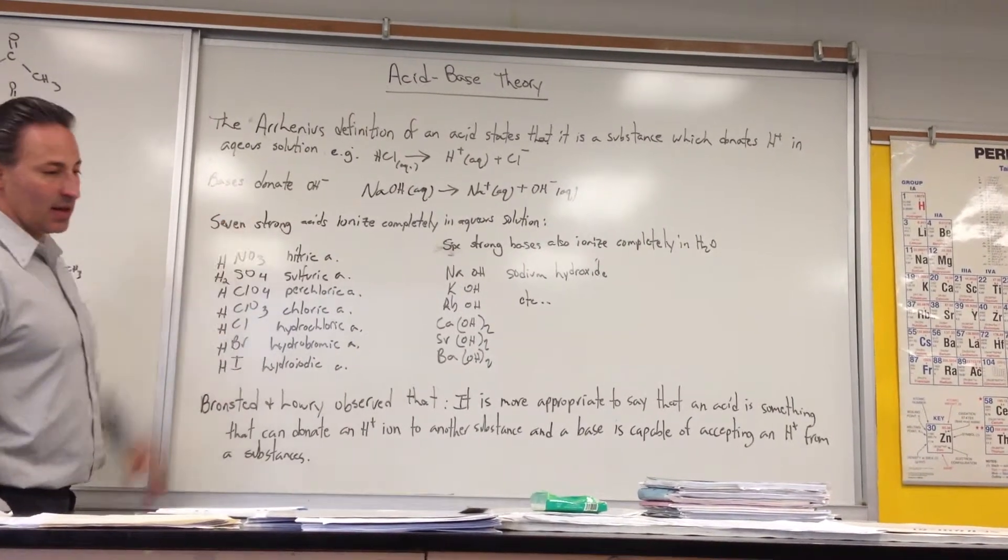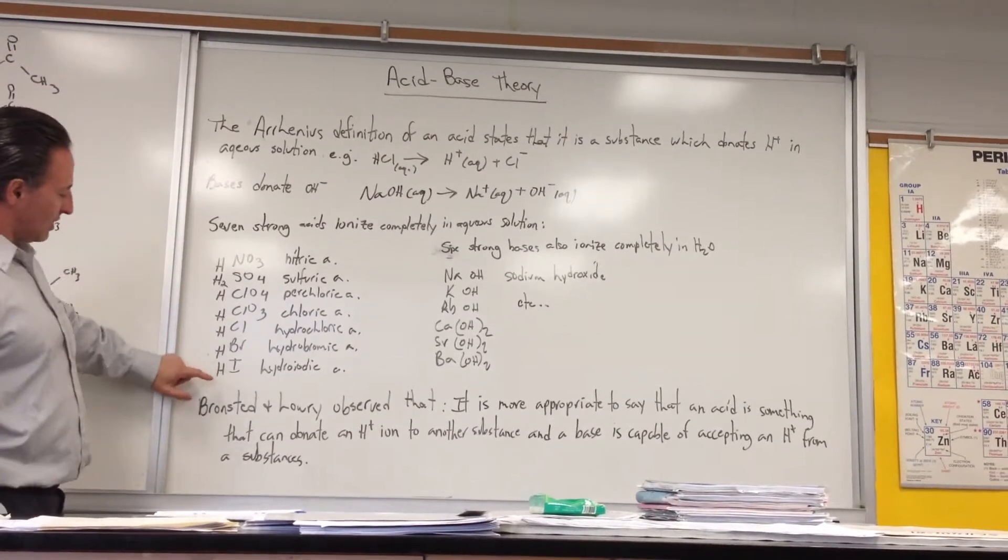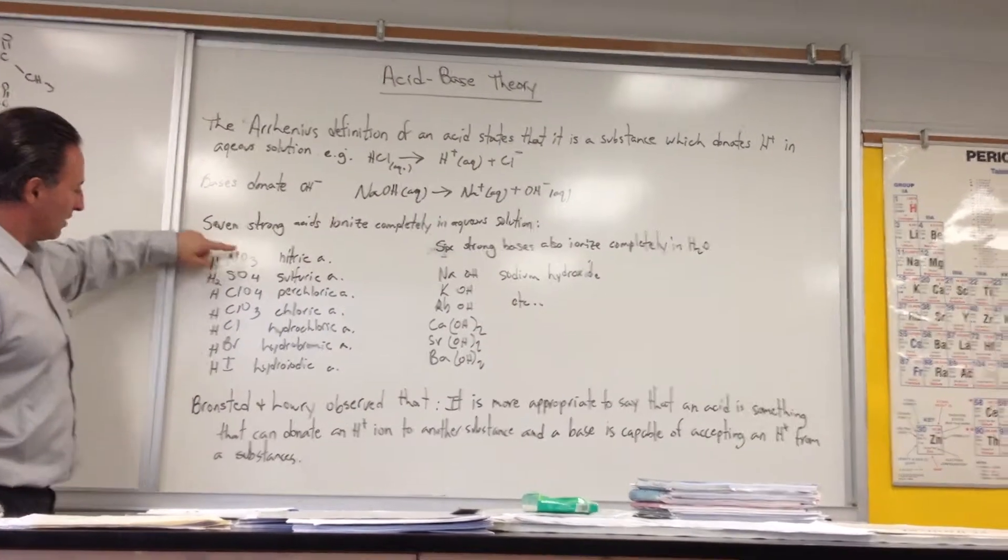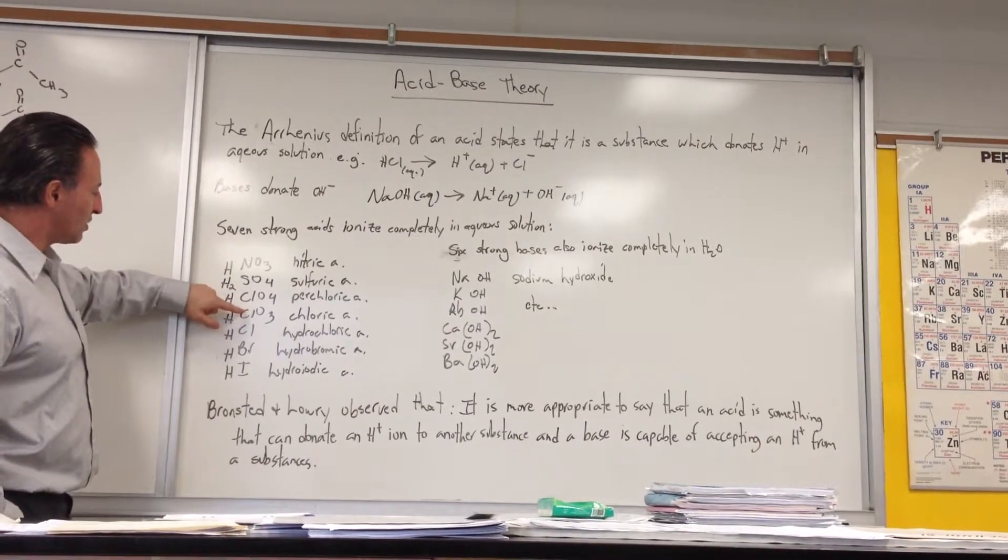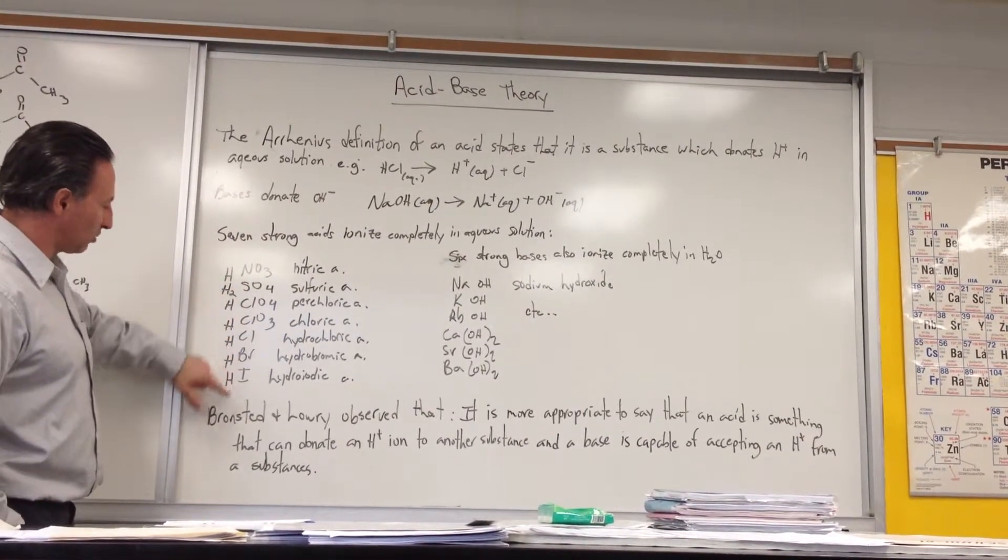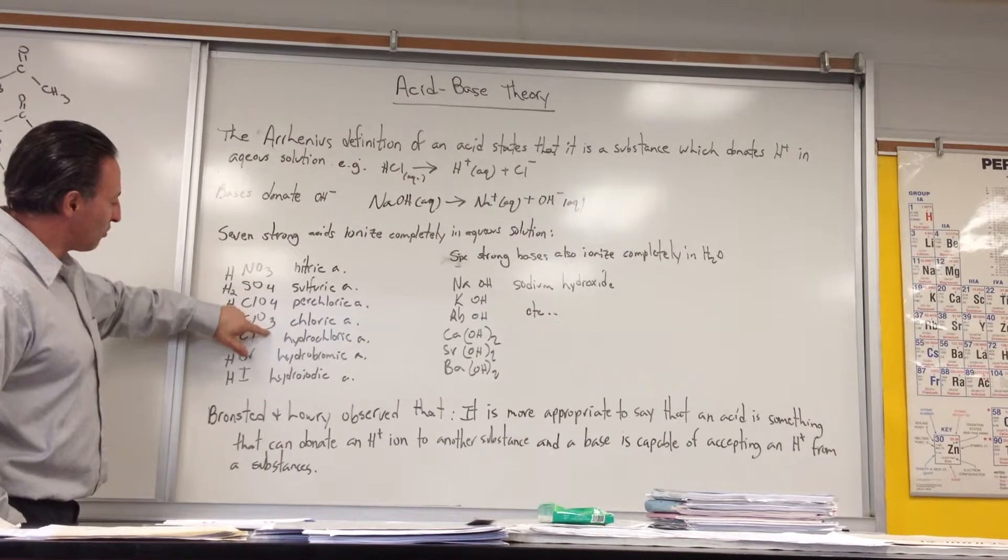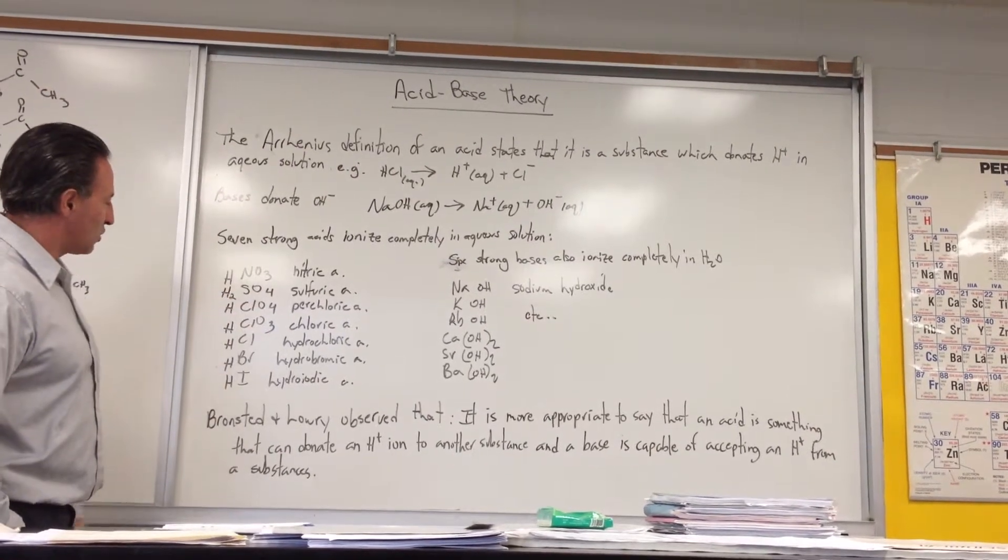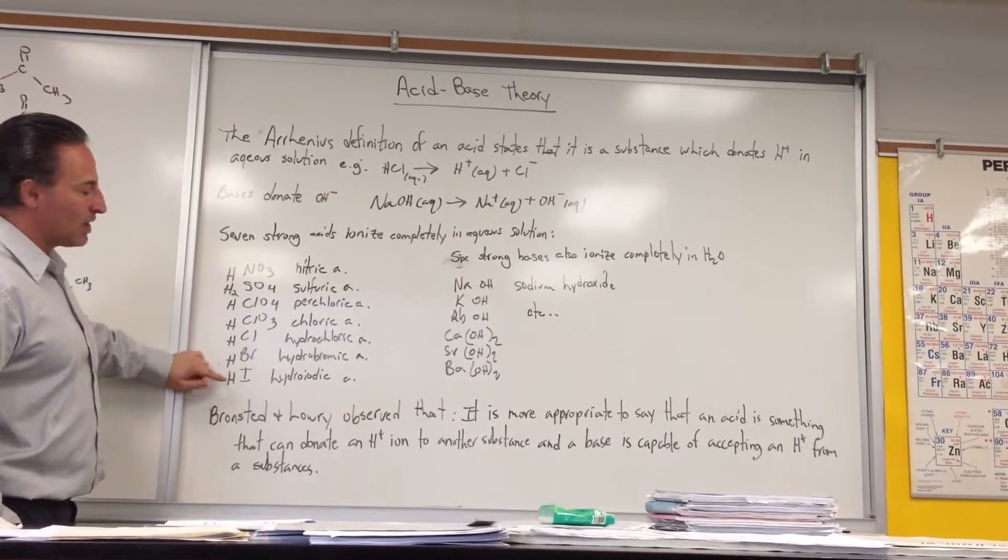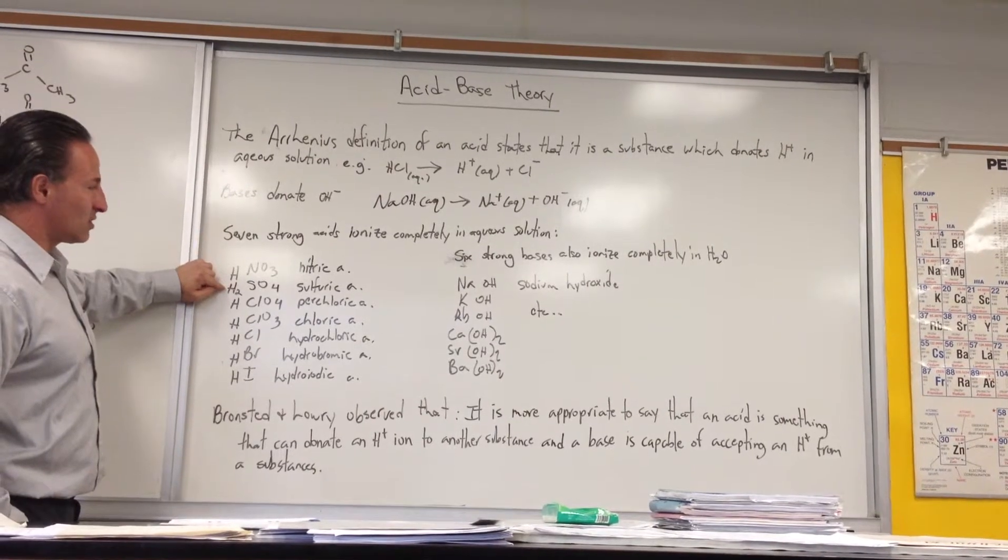All these acids ionize 100%. When you write the pattern, you'll notice that you write the anions first. Then you write 3, 4, 4, 3 for the number of oxygen atoms. All of them have one hydrogen atom except for sulfuric, which has two hydrogen atoms.